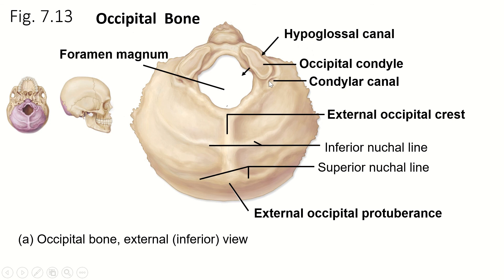We have the hypoglossal canal that goes laterally across under the occipital condyle. The hypoglossal nerve travels through that hypoglossal canal from the brain stem out to the tongue.